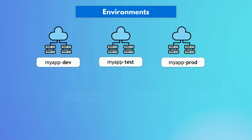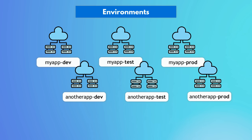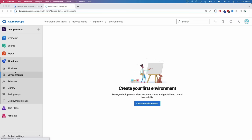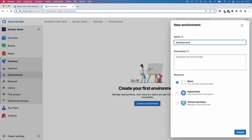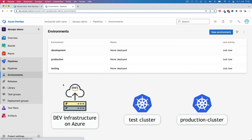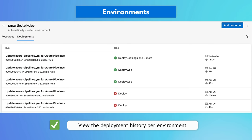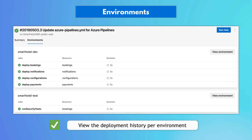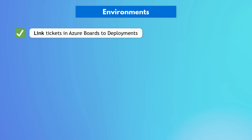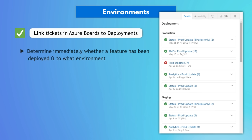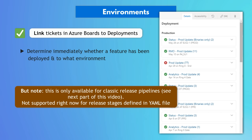When you have multiple environments for multiple applications, it may become difficult to have an overview of what version is deployed where, or when code was last deployed to a specific environment. That's where the environment feature comes in, which is part of Azure Pipelines. You can create environments in Azure DevOps that map to actual deployment environments, and configure in your pipeline which Azure DevOps environment you want to deploy to. Once the application gets deployed, you can view the deployment history per environment, and the deployment status can also be linked back to the original ticket.